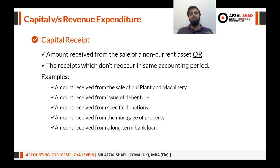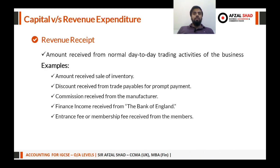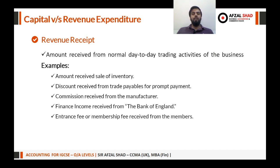Revenue receipt, on the other hand, is any amount received from the normal day-to-day trading activities of the business. Any amount not related to a capital receipt is going to be part of revenue receipt. For example, the amount received from the sale of inventory — selling inventory is a day-to-day operation. Inventory is a current asset, not a non-current asset, so it is related to revenue. Discount received from trade payables for prompt payment is also revenue, since trade payables are short-term in nature.